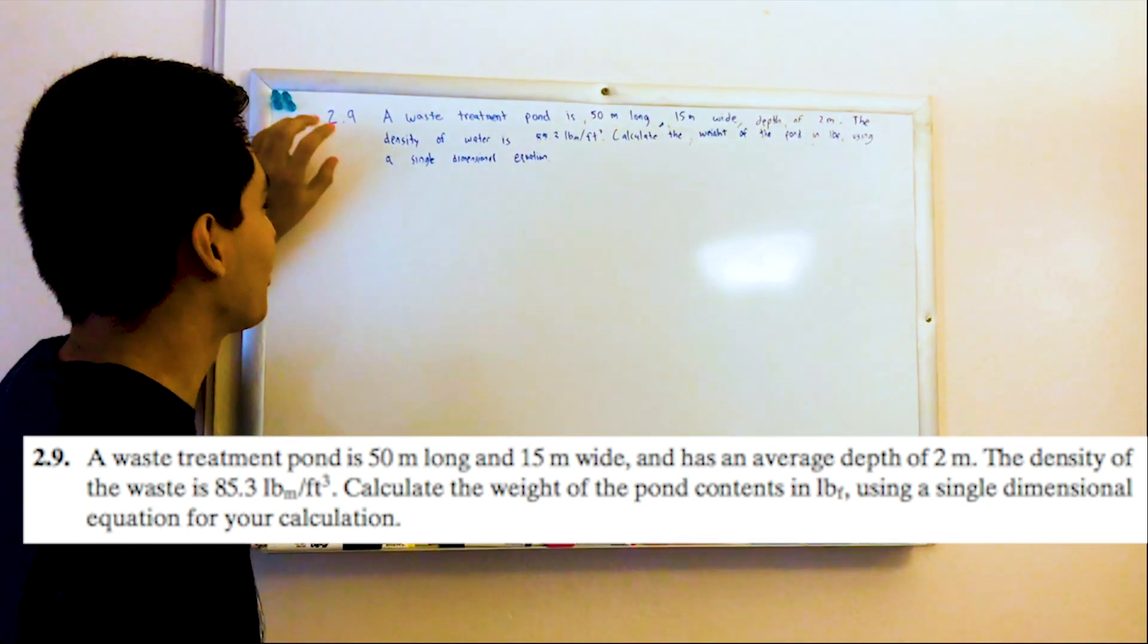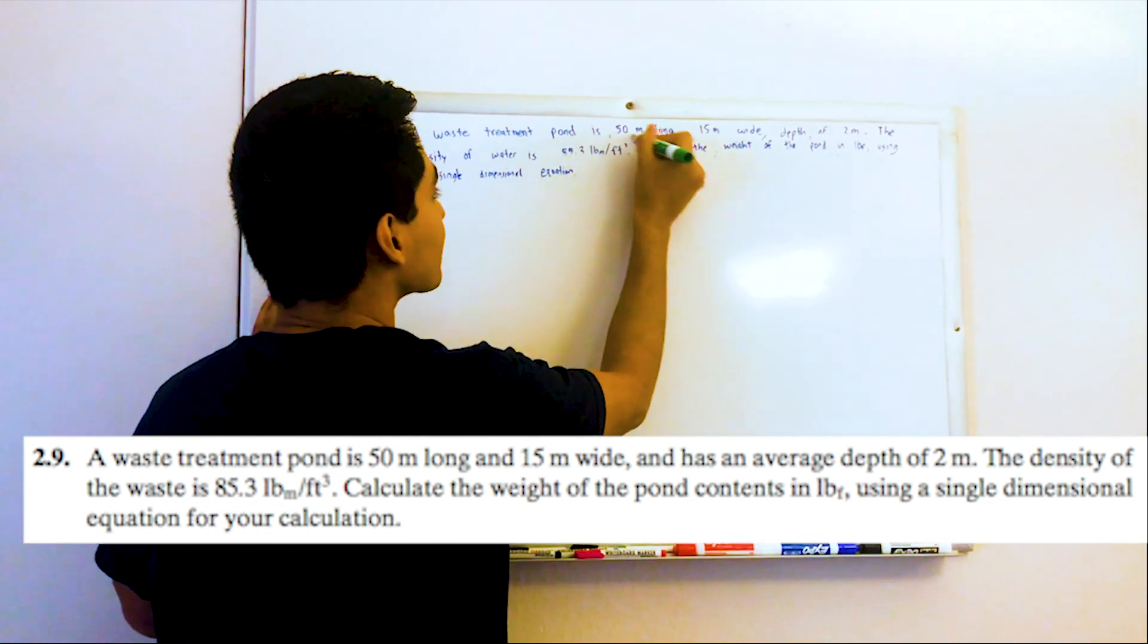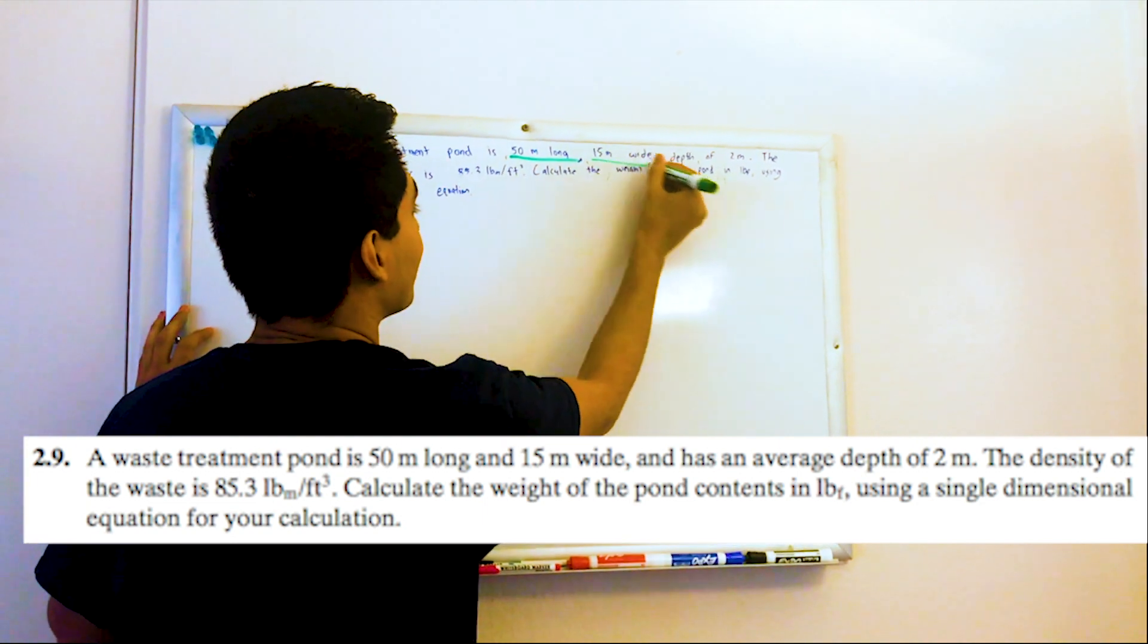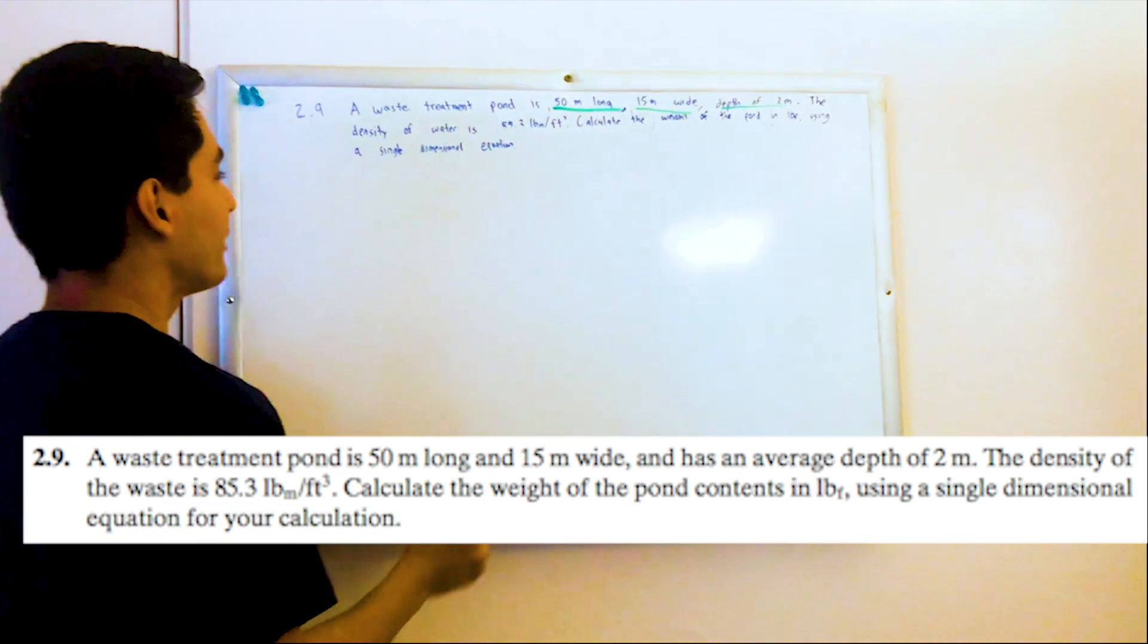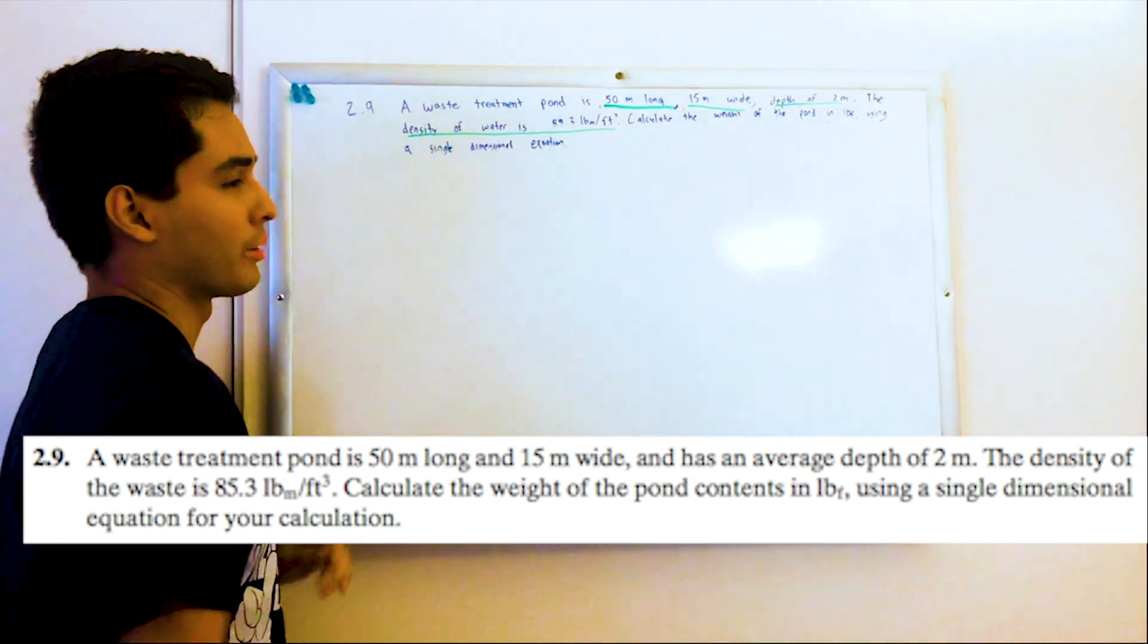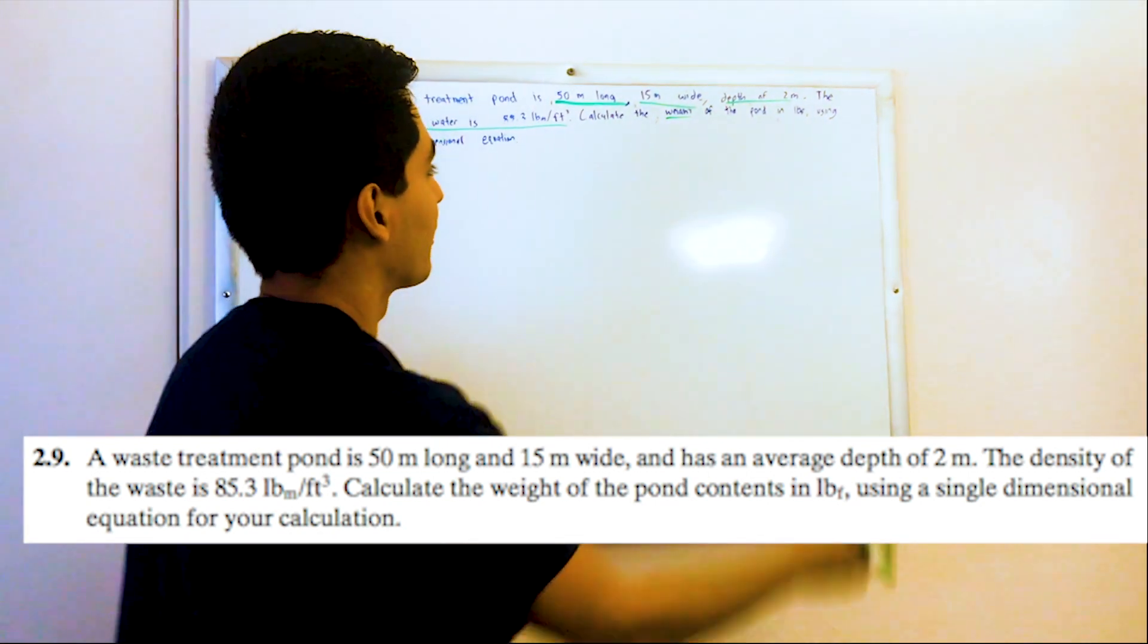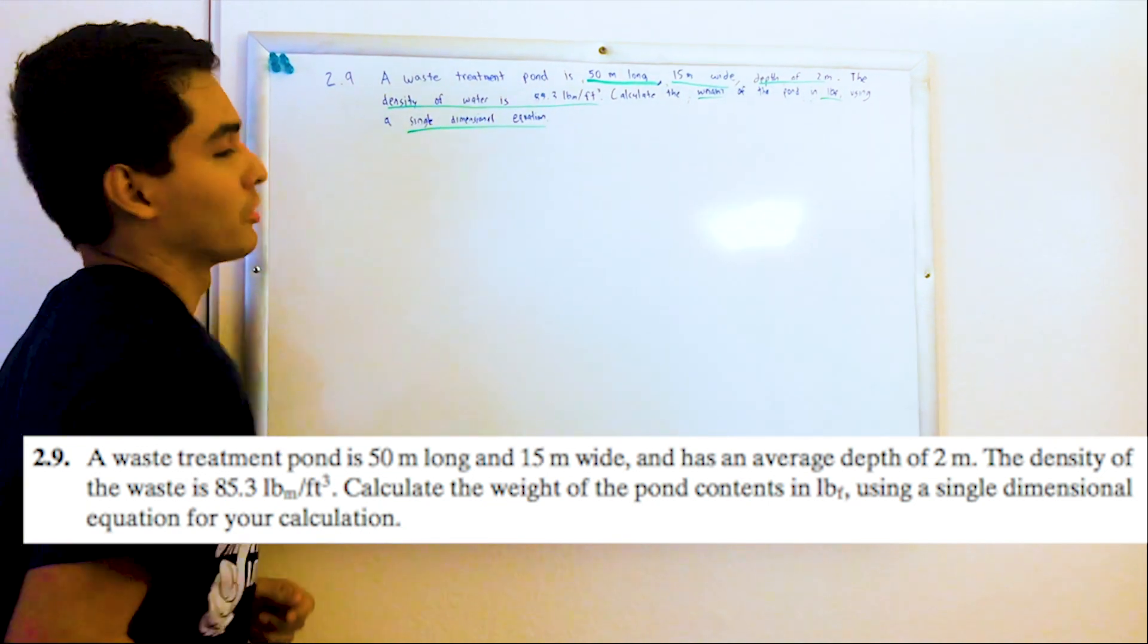So here we have a waste treatment pond that is 50 meters long and 15 meters wide, has a depth of 2 meters, the density of water is 85.3 pounds per cubic feet, and it wants us to calculate the weight of the pond in pounds force using a single dimensional equation.